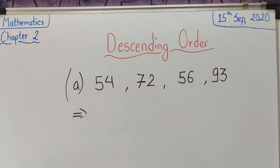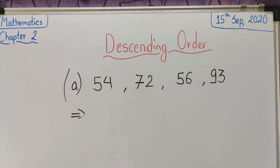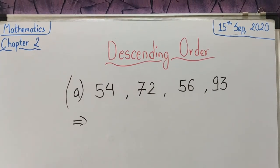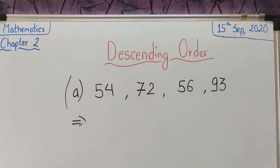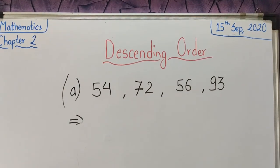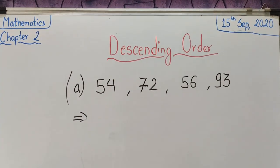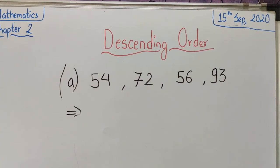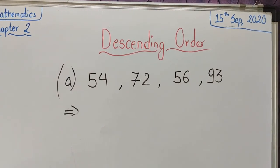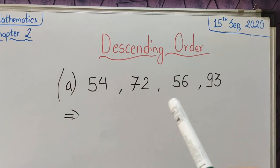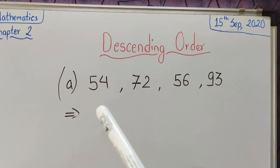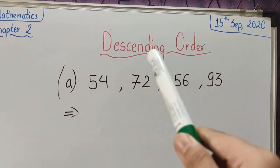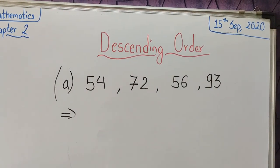Now we will learn descending order of two digit numbers. Do you remember what descending order is? Descending order means arranging the numbers from the biggest number to the smallest number. Descending order is completely opposite of ascending order. So now we can see these numbers in mixed order, and we have to arrange them in descending order. Let's learn.